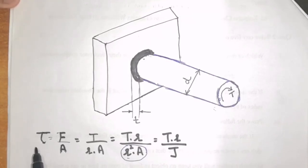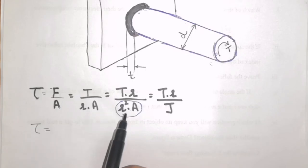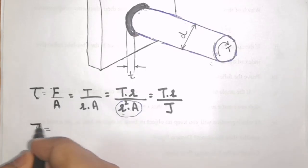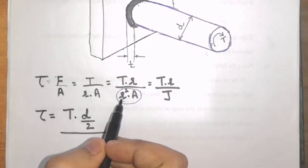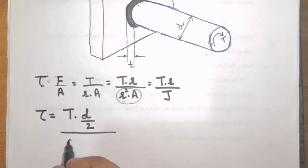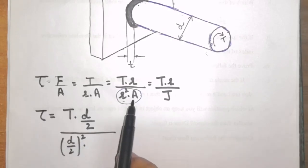Hence, the relation tau is equal to T into R divided by J, which we also use as a torsion equation. Substituting the required values in this equation, I will get tau is equal to T multiplied by R can be written as D by 2 divided by R square, will be D by 2 the whole square multiplied by area, area of the shear.